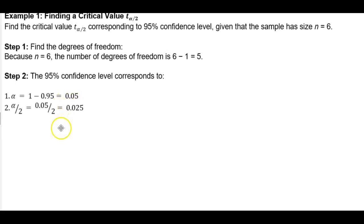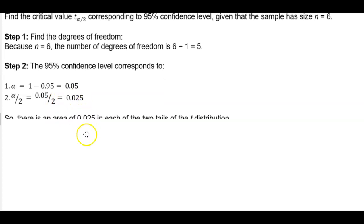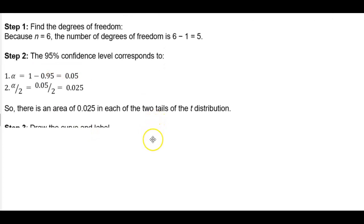Then we need to take alpha, which is 0.05, and divide that by 2. Well, 0.05 divided by 2 gives us 0.025. So there is an area of 0.025 in each of the two tails of the t distribution.